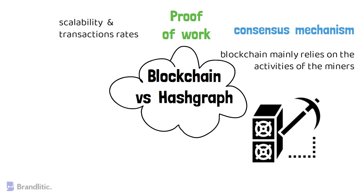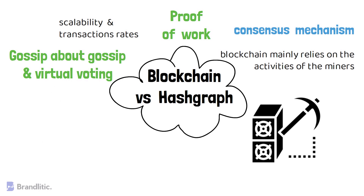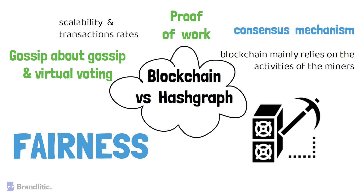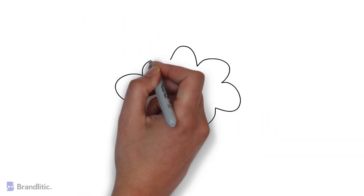Hashgraph, on the other hand, employs a consensus mechanism that does not give too much power to miners. Instead, hashgraph uses consensus algorithms called gossip about gossip and virtual voting to decide which transactions are valid and should be added to the network. This way the majority has a say over which transactions go through, and there is much more clarity in hashgraph compared to blockchain.